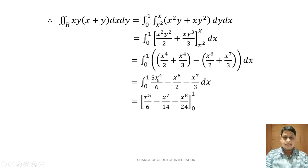Now we integrate with respect to x. Integration of x⁴ gives x⁵/5; the 5 cancels with the 6 giving x⁵/6. Integration of x⁶ gives x⁷/7, denominator 7×2 = 14. Integration of x⁷ gives x⁸/8, denominator 8×3 = 24. Limit is 0 to 1. Replacing x by upper limit 1: 1/6 minus 1/14 minus 1/24. For lower limit it is 0. After simplification, the answer is 3/56.